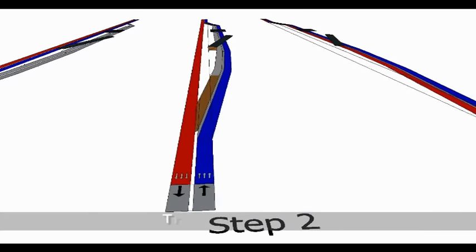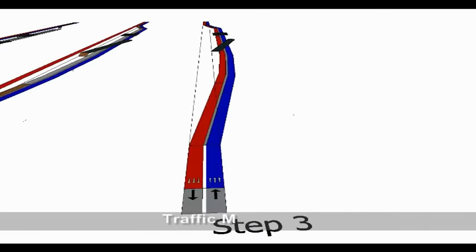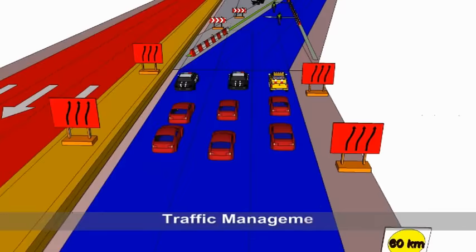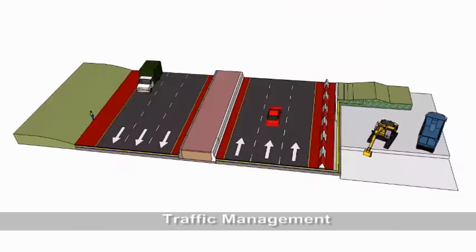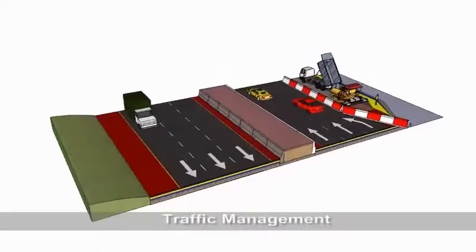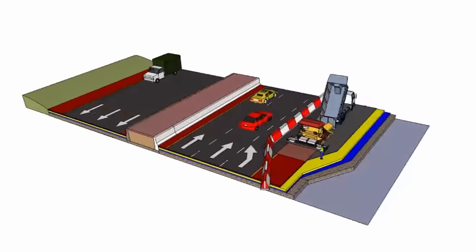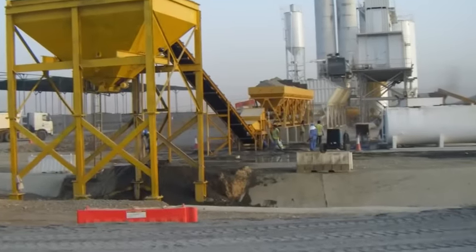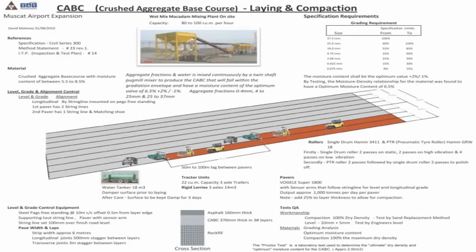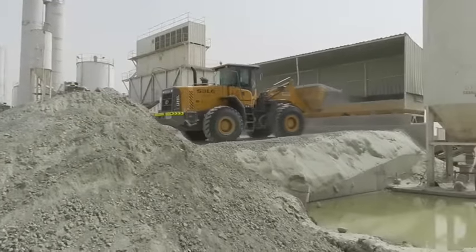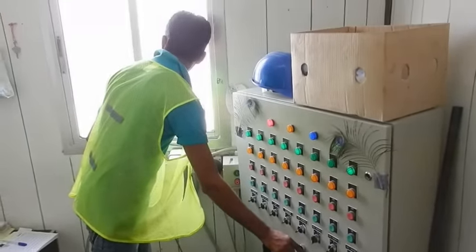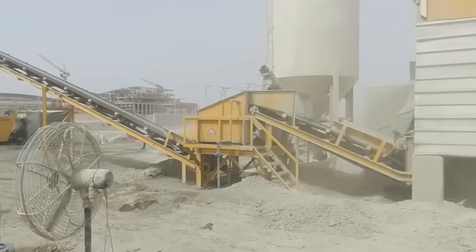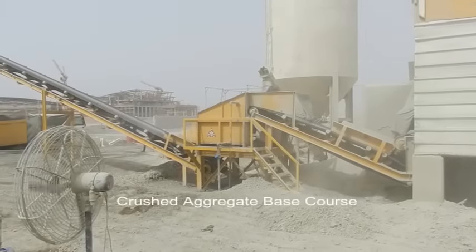Before working on live roads, temporary traffic management plans are produced and implemented. The crushed aggregate base course is produced by the accurate proportioning and blending of four aggregate sizes and water, using an aggregate stabilizer mixing plant with a contiguous pug mill mixer.